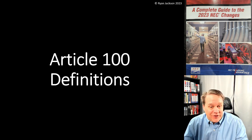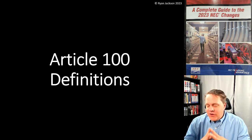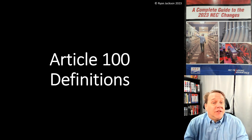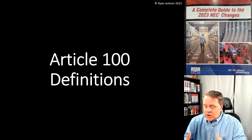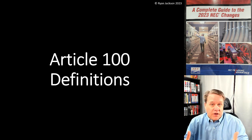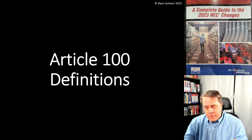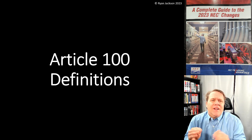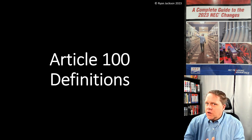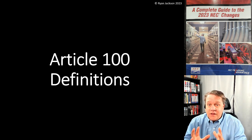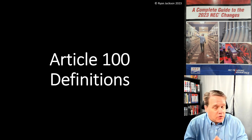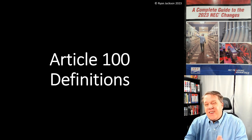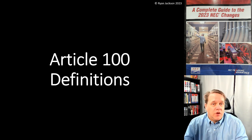Article 100 is where we start because it tells us how to speak the language of the code. You wouldn't open a book written in a language you didn't understand and pretend to follow it — the same is true with the NEC. The code has its own language found in Article 100's definitions. You might think you know what a term means, but the NEC may define it differently than you'd use it on the street or on the job site.